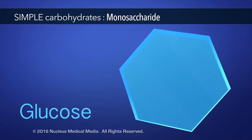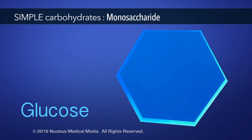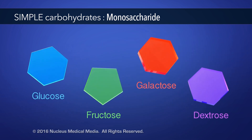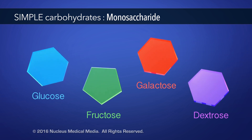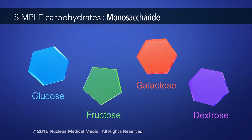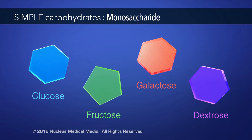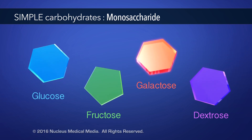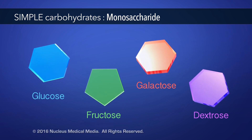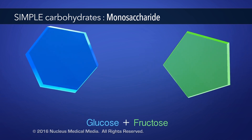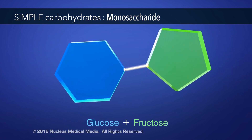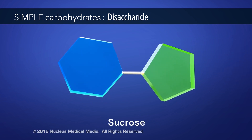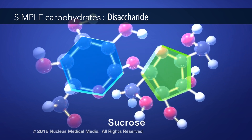Words ending in -ose or -os are typically sugars, such as the monosaccharides fructose, galactose, and dextrose. Like glucose, these monosaccharides are all simple sugars because they are made up of a single sugar molecule. When glucose and fructose are chemically bonded together, we get a disaccharide called sucrose, commonly known as table sugar.